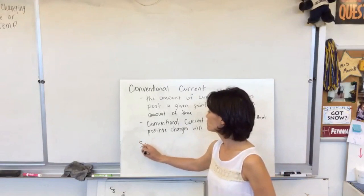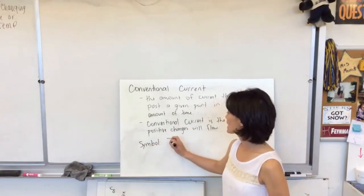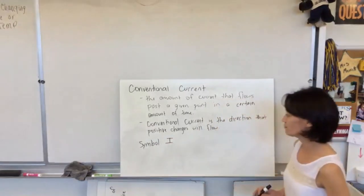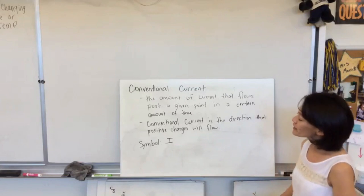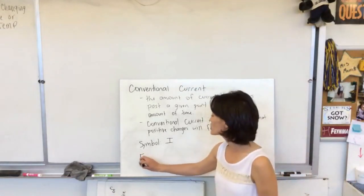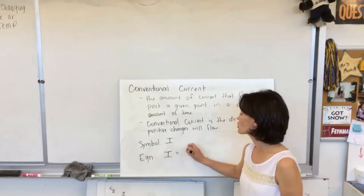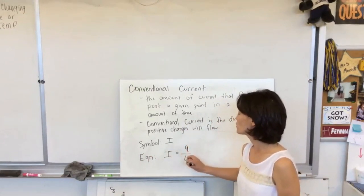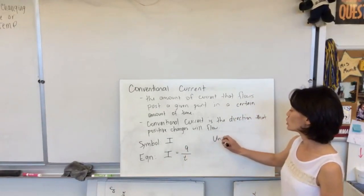The symbol for current is a capital I. When we get back in the class, I'll explain where the I comes from. And the equation is right on the definition. I is equal to the amount of charge that flows past a given point in a given amount of time. So I is equal to q over t. And if we think about the units,